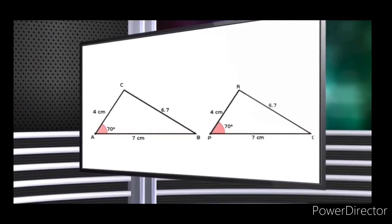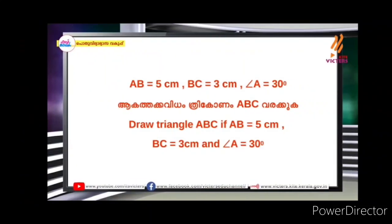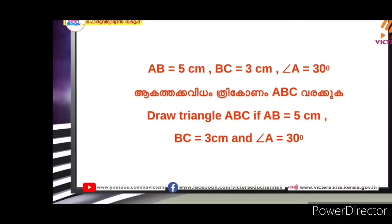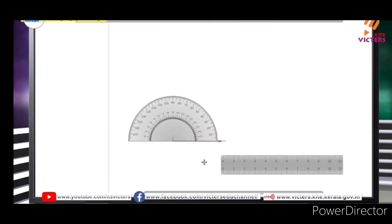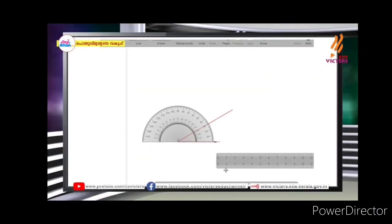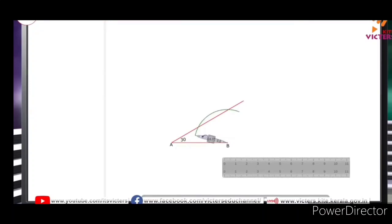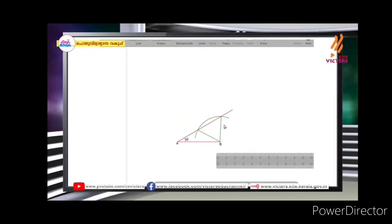The three sides are equal and the three angles are equal. It is a trigon — an equilateral triangle is a trigon. You can solve these problems like this: AB = 5cm, BC = 3cm, angle A = 30 degrees. Use a protractor for AB = 5cm.